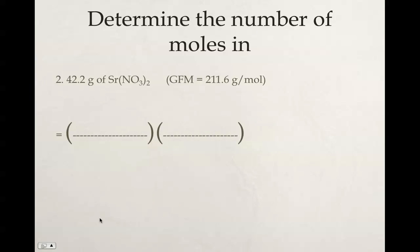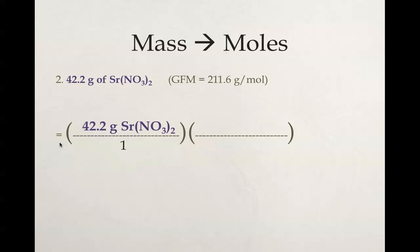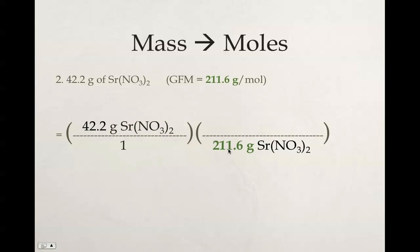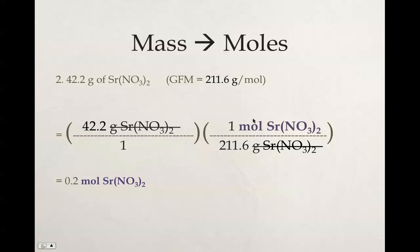Here's a very similar question, so you could pause it and try this out yourself. You should start with 42.2 grams of Sr(NO₃)₂, our strontium nitrate, placing it over 1. We're going to convert from grams to moles. Our GFM goes in the denominator, and moles go up in the numerator. So grams of strontium nitrate diagonal. The GFM is 211.6, equal to 1 mole of strontium nitrate. If we solve this, 42.2 times 1 divided by 211.6 gives us 0.2 moles of strontium nitrate.